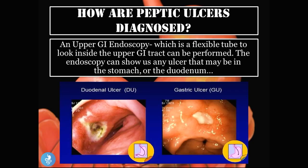So how are peptic ulcers diagnosed? An upper GI endoscopy — a flexible tube used to look inside the upper GI tract — can be performed. The endoscopy can show any ulcer in the stomach or the duodenum. Here you can see the scope has gone down into the duodenum, and the endoscopic view shows that sore developed in the mucosal layer. The scope is then in the stomach, or gastric cavity, where the gastric ulcer is visible in the mucosal layer.